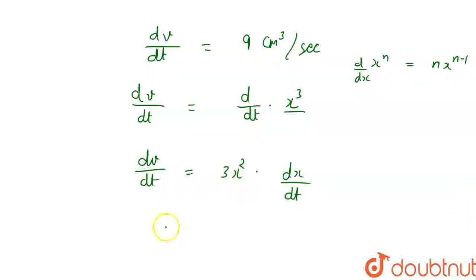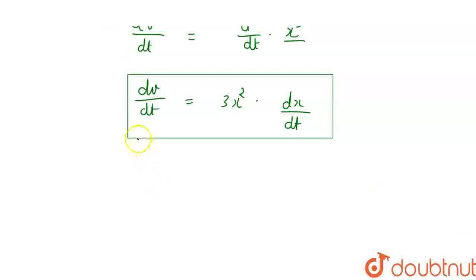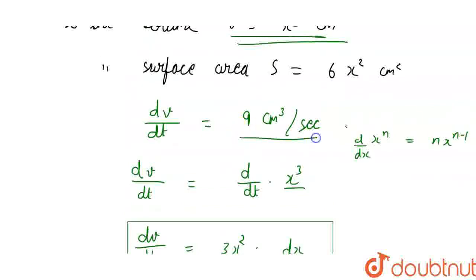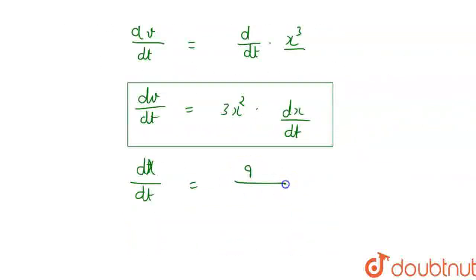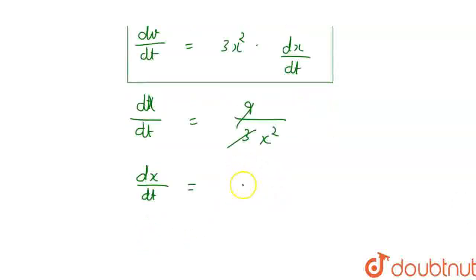So dV/dt = 3x² · dx/dt. From here we find the value of dx/dt: dx/dt = dV/dt divided by 3x². Putting dV/dt = 9 cm³/s, we get dx/dt = 9 / (3x²) = 3/x².